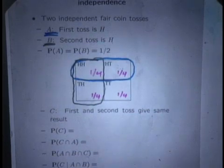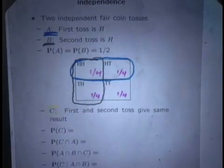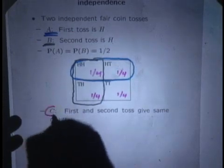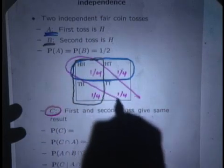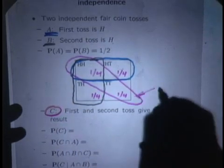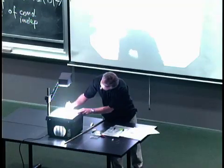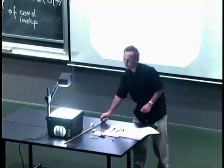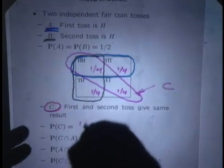Now let's consider a third event C, which is that the first and second toss give the same result — that is, the event that we obtain heads-heads or tails-tails. What's the probability of C? C is made up of two outcomes, each one of which has probability 1/4, so the probability of C is 1/2.